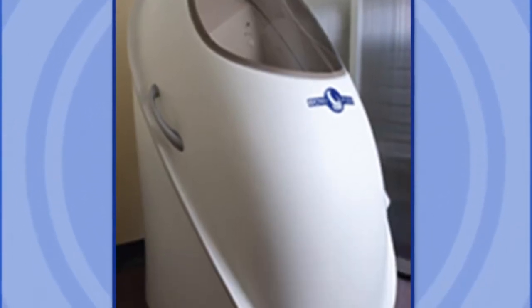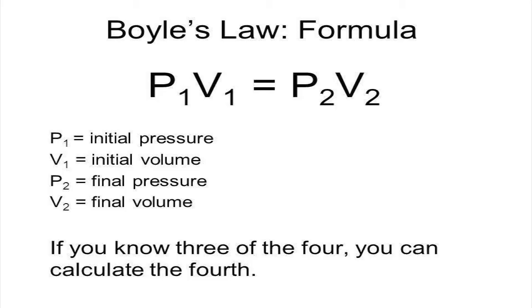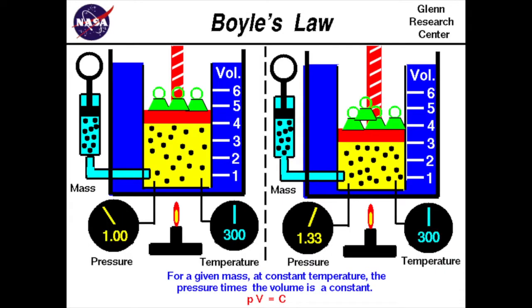So how does a device like the Bod Pod actually work? ADP uses the relationship between pressure and volume, also known as Boyle's Law, to measure the volume of a person's body when they're inside an enclosed space. Boyle's Law states that volume and pressure vary inversely with each other through the equation P1V1 equals P2V2. Using this equation, the Bod Pod is able to determine a person's body volume by measuring pressure responses to small volume changes in an enclosed chamber.